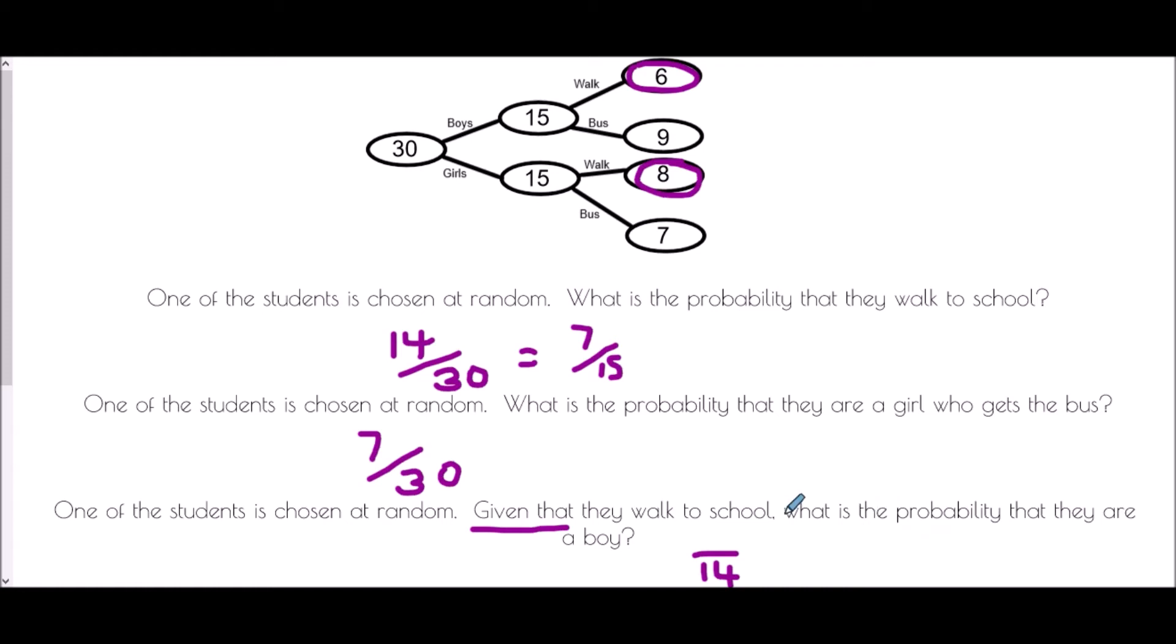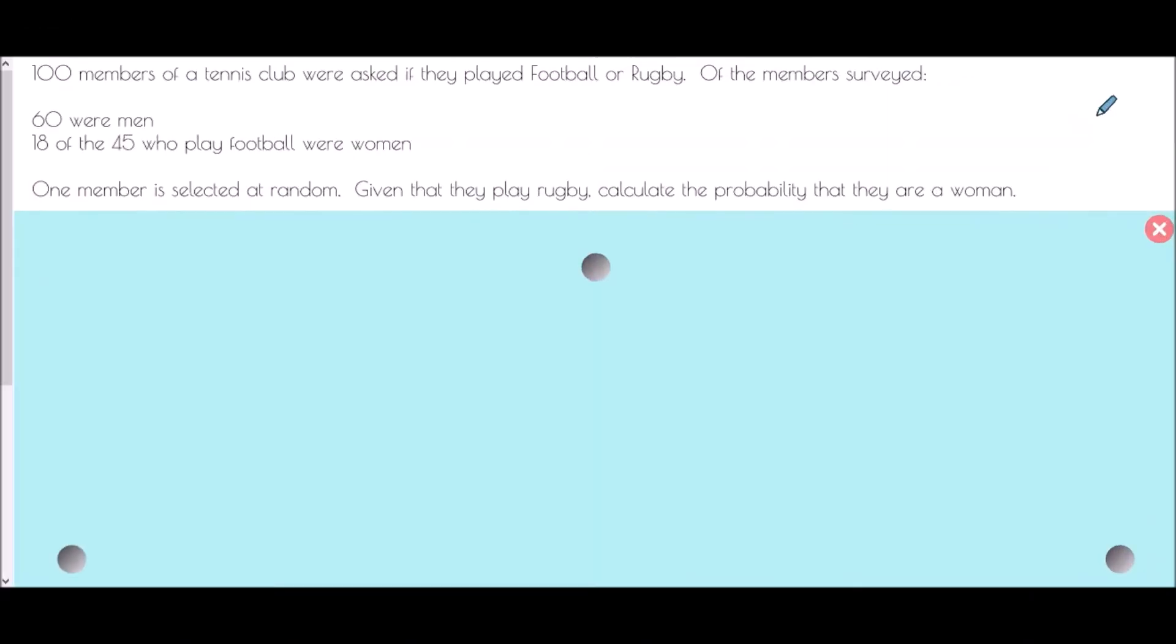What is the probability that they are a boy? Well, having a look at the two groups that we've just marked, six of them are boys. And so it's six out of 14, which again, we could simplify to three out of seven.